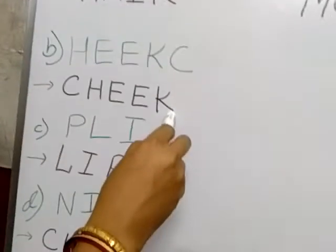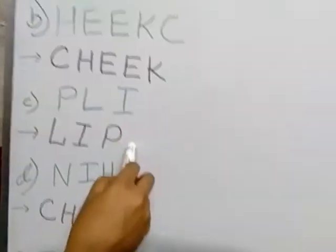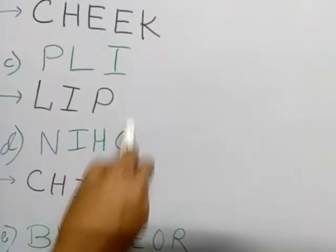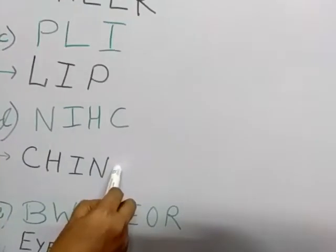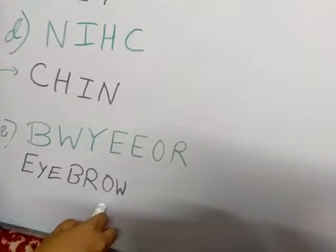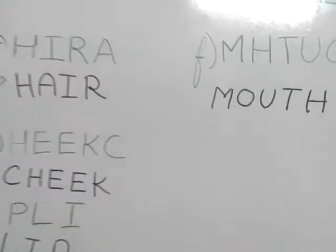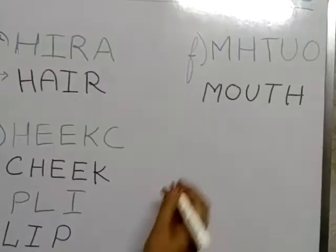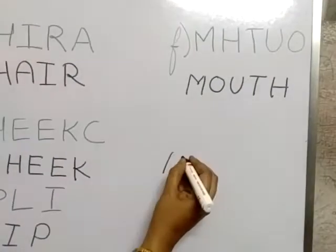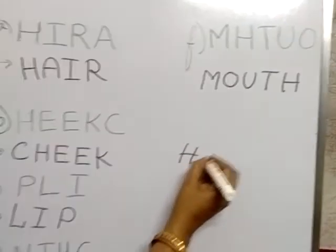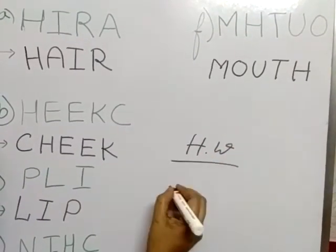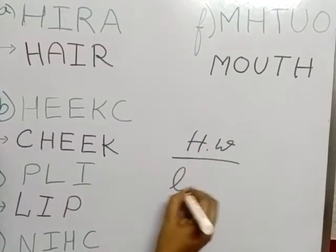Again: hair, cheek, lip, chin, eyebrow, mouth. Okay, note down homework: learn and write these spellings.